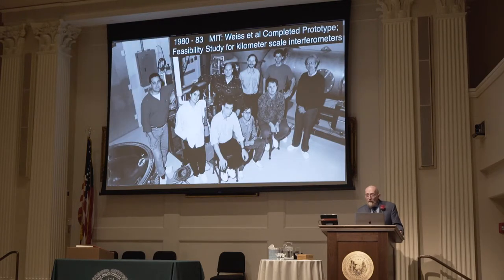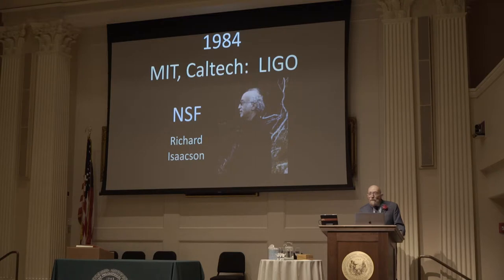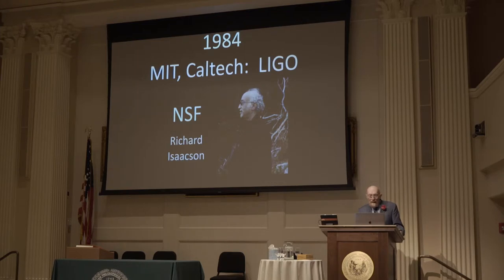At MIT, Ray Weiss completed the construction of a smaller prototype, but more importantly he carried out a feasibility study for kilometer-scale interferometers and concluded that it was economically and technically feasible to build these things. So in 1984, MIT with Ray Weiss, Caltech with Ron Drever and I, created the LIGO project in collaboration with the National Science Foundation and Richard Isaacson — who should be regarded as the fourth founder of LIGO — who had made major contributions to the theory of gravitational waves and was the real person in Washington who made this thing happen.